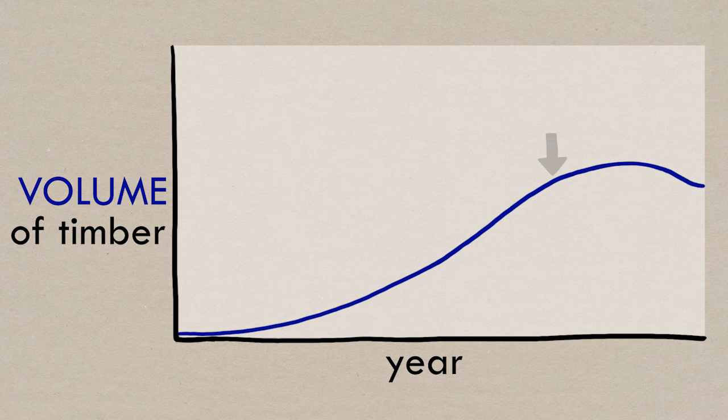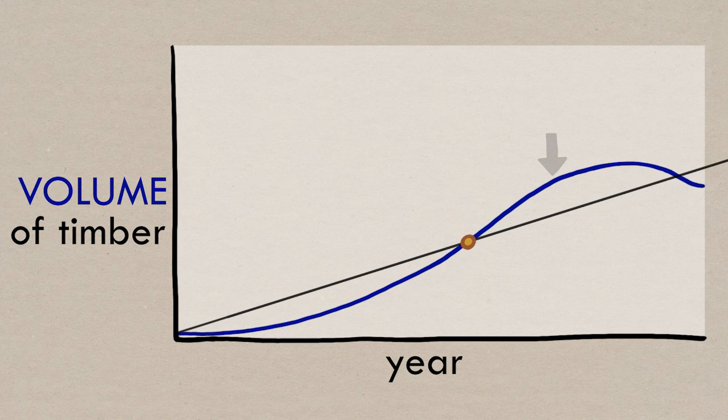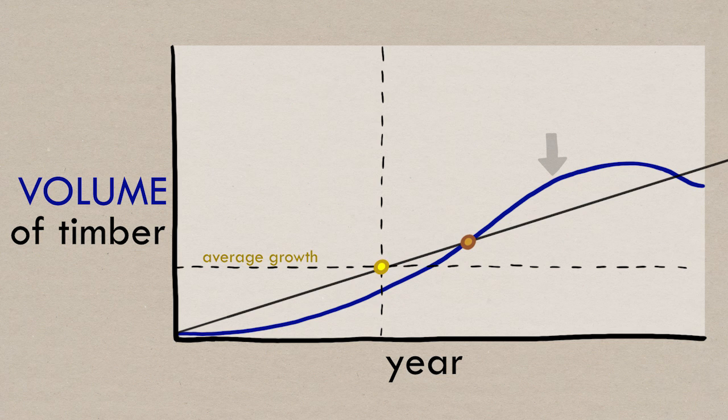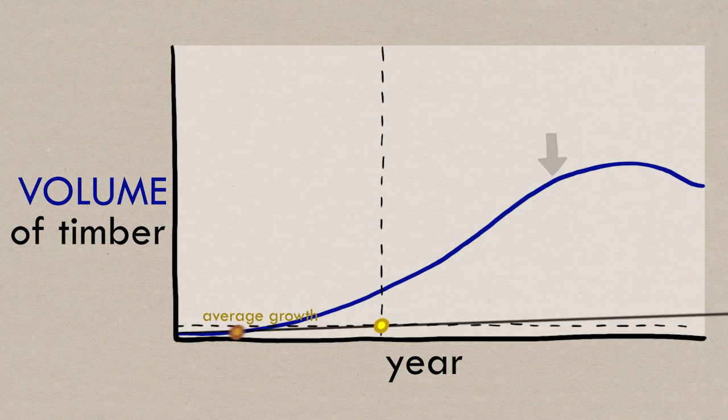So to calculate that, it would just be total volume of wood divided by the number of years at that point. It's just the slope of this line. Let's add a little thing here, just so we can visualize the slope of the line, the average growth rate.